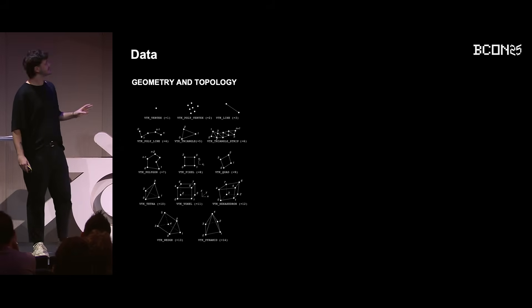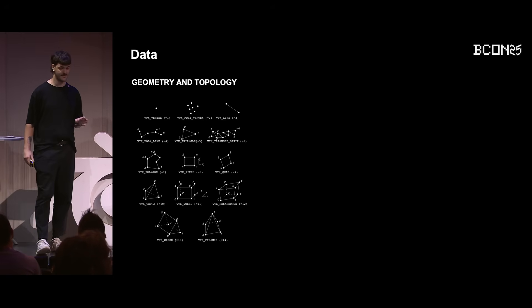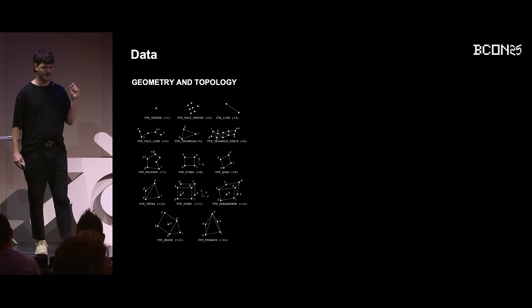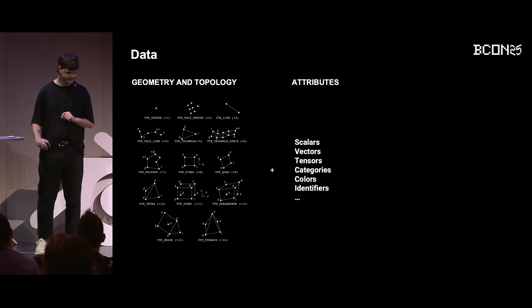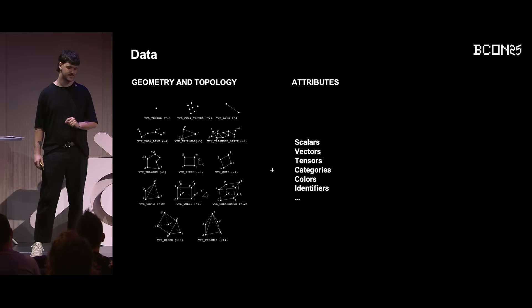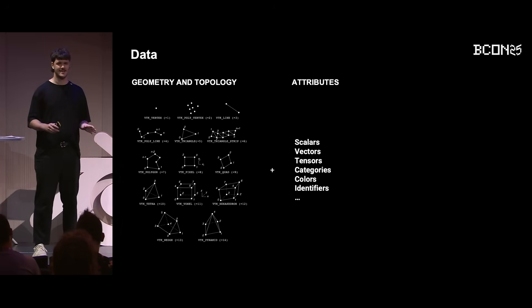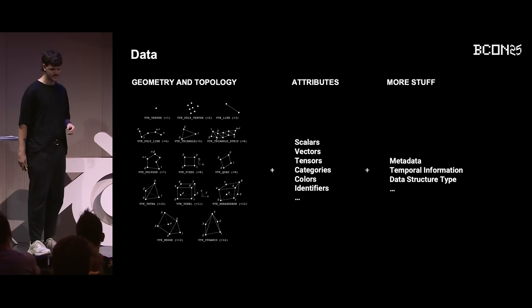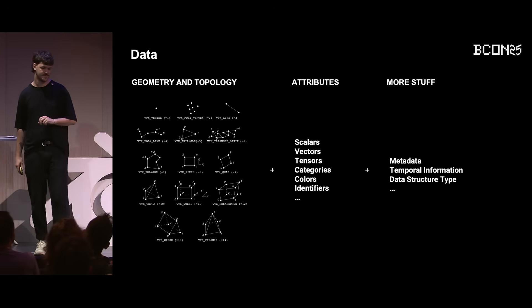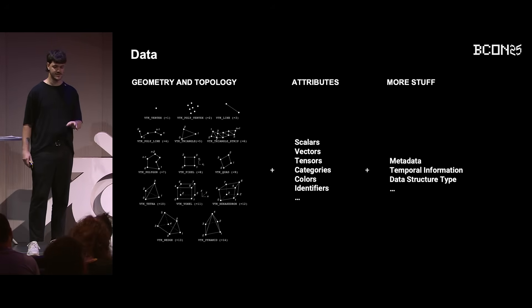It contains everything. First, the skeleton of the world — the geometry and topology. This defines the fundamental shapes: the vertices, the lines, the triangles, but also the volumetric data like tetrahedra or hexahedra. Then we have the attributes: scalars like pressure or temperature, vectors like velocity fields, even tensors that describe stress and strain. We also have metadata, temporal information for animations, and so on. It's rich but also very complex — a digital representation of a physical phenomenon.